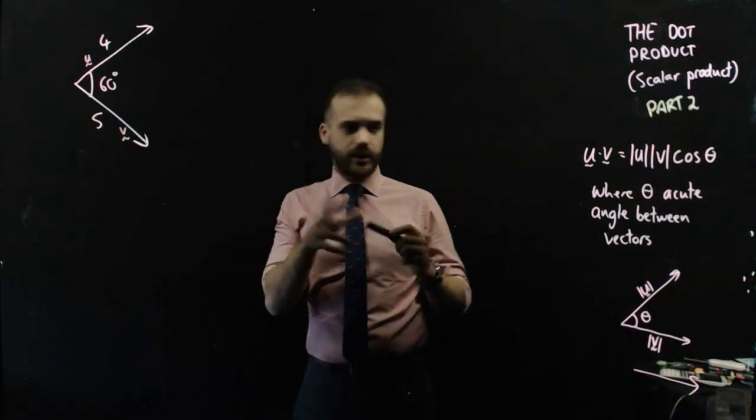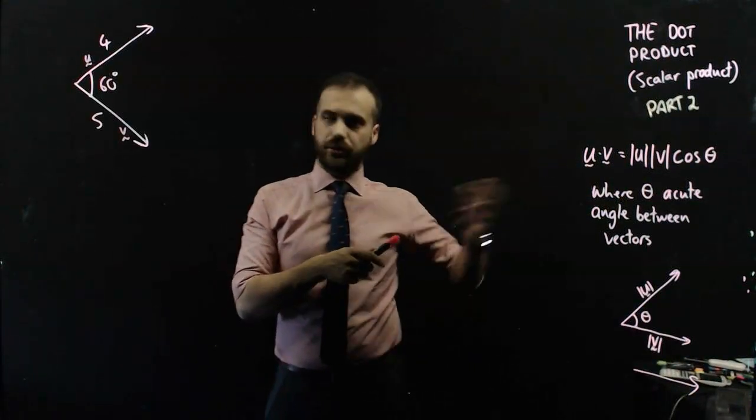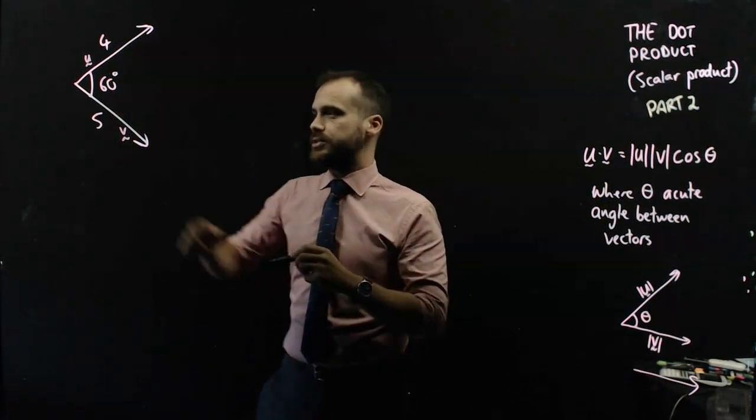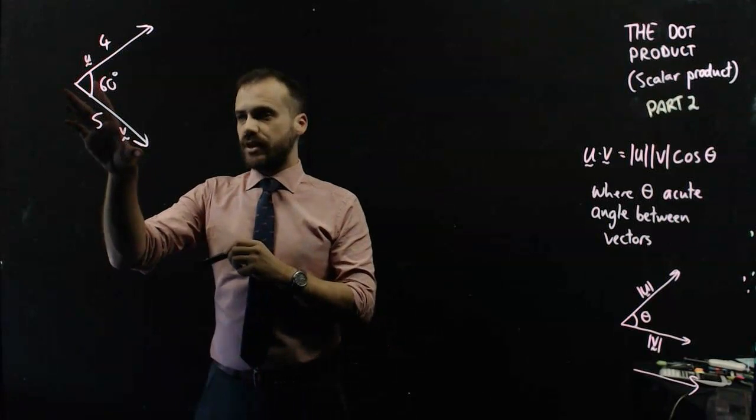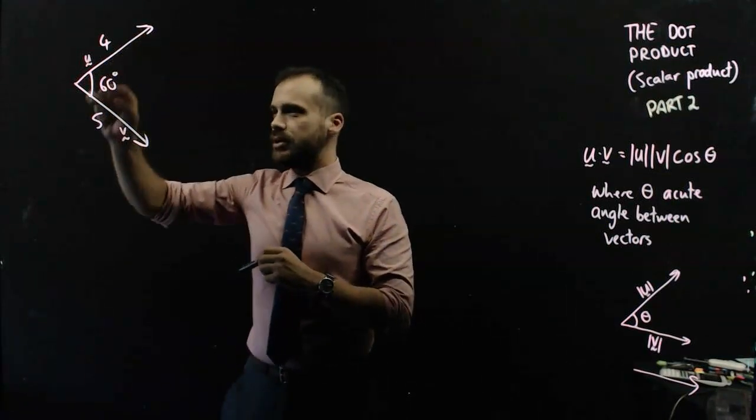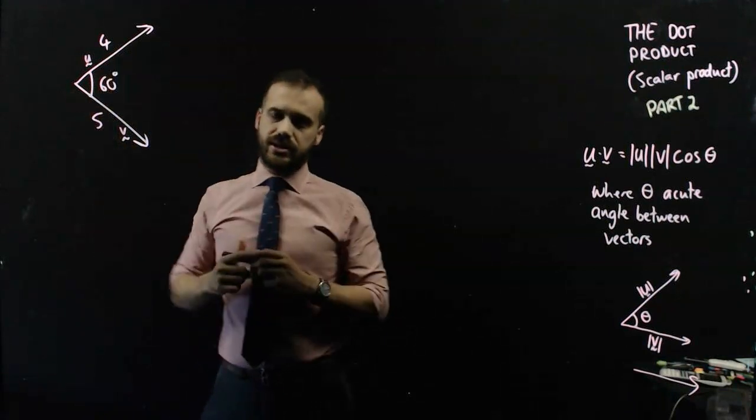So at its most simple, we can use this version of the dot product to find the dot product of these two vectors. We know the magnitude of this vector is 5, we can see the magnitude of this vector is 4, and we can see the angle between them is 60 degrees.